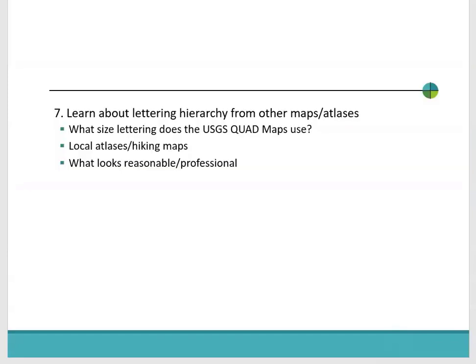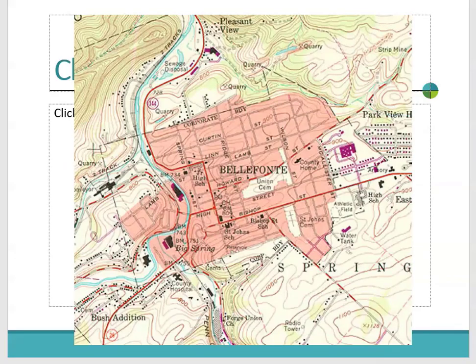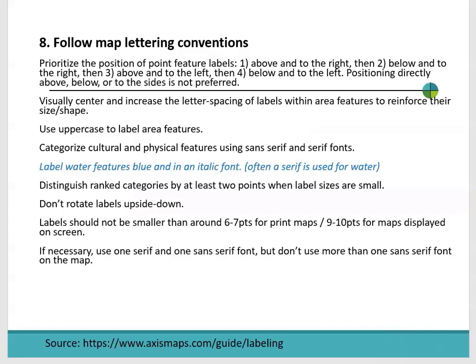Number seven: learn about lettering and hierarchy not from listening to me, but next time you pick up an atlas or a good map, or next time you look on Google Streets, think about the hierarchy that people are using. For example, what size lettering does the USGS quads use? Have you ever thought about what their template is, what kind of lettering they use? They also use two different fonts. I've recently stylized some USGS quads in QGIS and learned a lot about how they stylize their maps. It is important, unless you're trying to be fancy and do something completely different, to follow mapping lettering conventions.